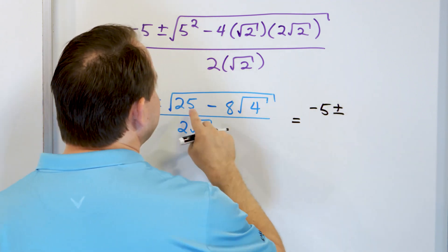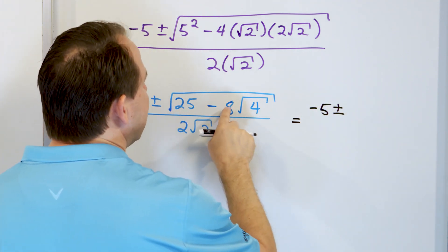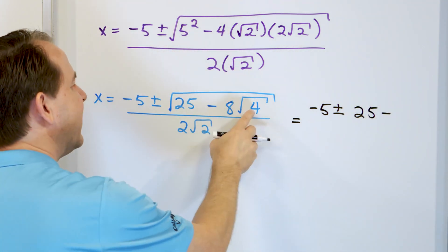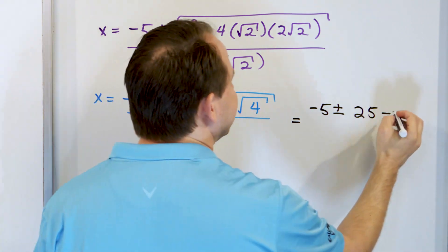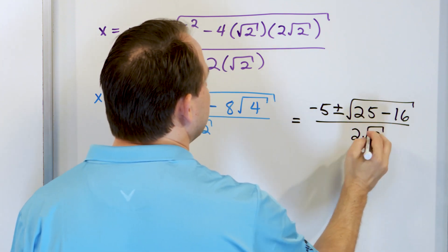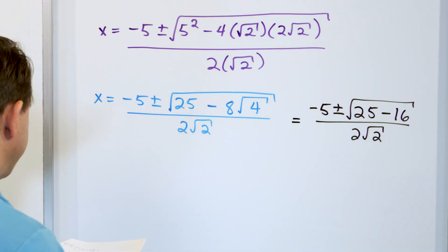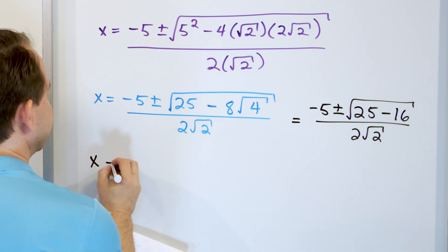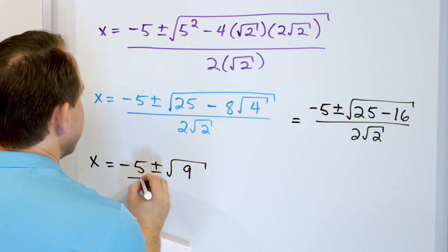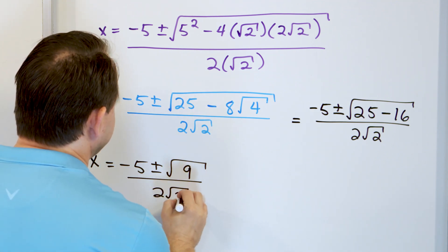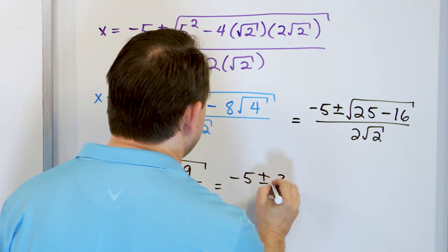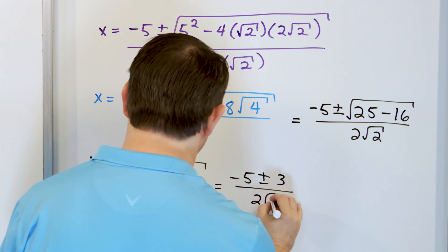When we crank through this: we simplify — negative 5 on the outside, and on the inside we have 25 minus 8 times 2, because the square root of 4 is 2, so 8 times 2 is 16. This lives under a radical, and we have 2 root 2 on the bottom. Now, 25 minus 16 is 9. So we have negative 5 plus or minus the square root of 9, over 2 times the square root of 2. The square root of 9 is 3, giving us negative 5 plus or minus 3, over 2 root 2.